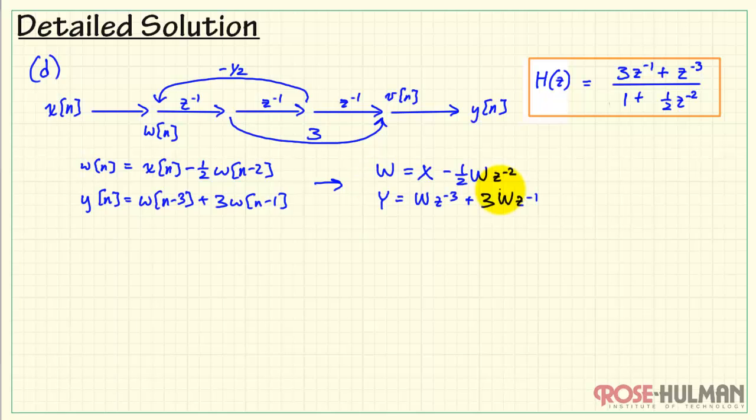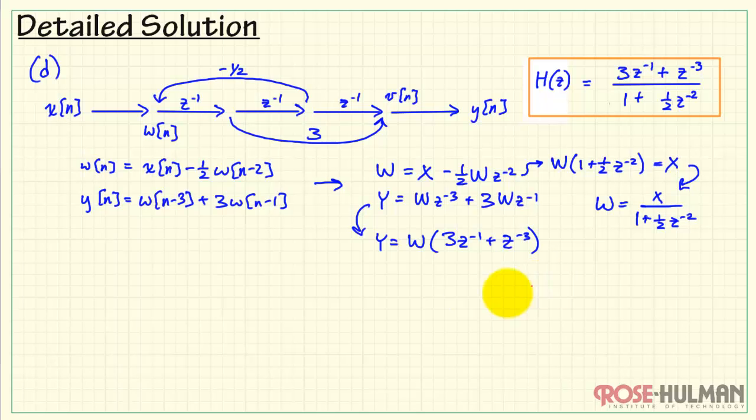As we did before, take this into the z transform domain. It looks like I can collect together all the terms associated with w. Putting the polynomial on the other side, we have w equals x divided by 1 plus 1 half z inverse squared. Now I've got w appearing in two places, and that leaves us with this polynomial. And now I can go ahead and substitute in that value for w.